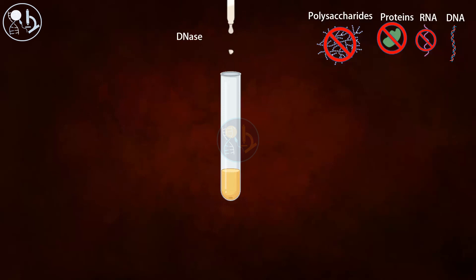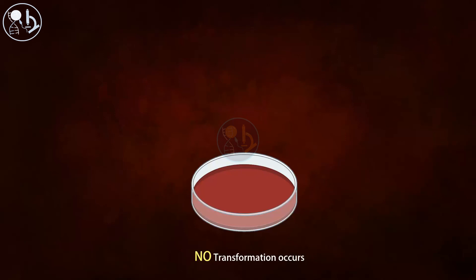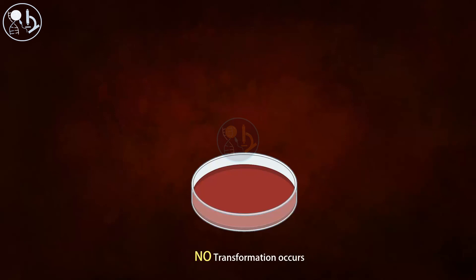Finally, they added DNase to the extract to remove the DNA. Then they mixed it with the live 2R bacteria and put them on a culture plate, and this time no colonies appeared. This result confirms that DNA must be the transforming principle.